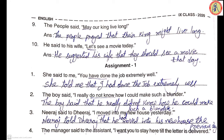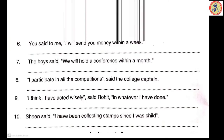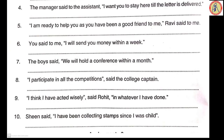The tense 'have done' is present perfect, changing to past perfect: 'She told me that I had done the job extremely well.' 'The boy said, I really do not know how I could make such a blunder.' → 'The boy said that he really did not know how he could make such a blunder.' 'Nearer said to Deeras, I moved into my new house yesterday.' → 'Nearer told Deeras that he had moved into his new house the previous day.'